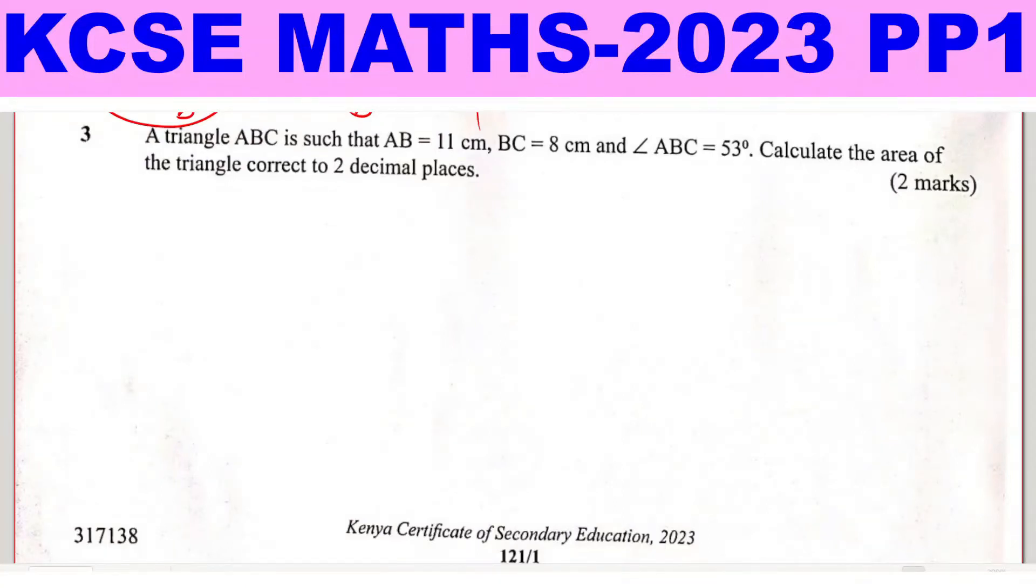Question number three: a triangle ABC is such that AB equals 11 cm, BC equals 8 cm, and angle ABC equals 53 degrees. Calculate the area of the triangle correct to two decimal places.